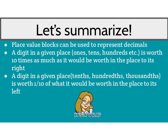Let's summarize what we've talked about today. We first looked at place value blocks and learned that we could use those to represent decimals. We also learned that a digit in a given place — for example, the ones, tens, or hundreds — is worth ten times as much as it would be worth in the place to its right. So if my digit is in the ones place, it is worth ten times as much as the digit to the right.